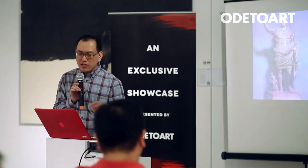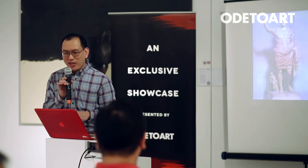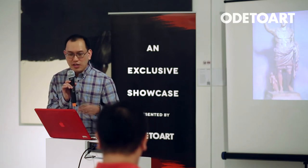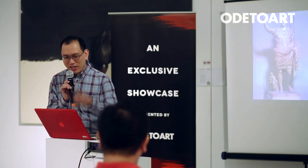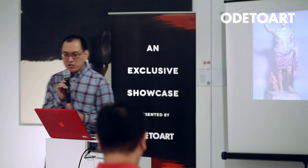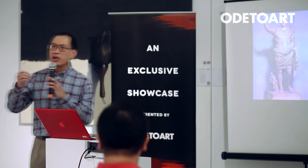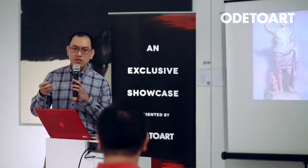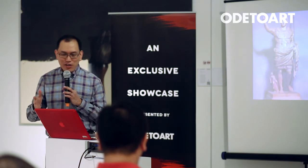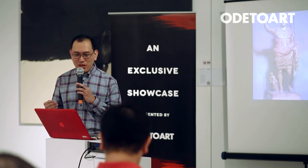Statues of Augustus always show him at the prime of his life, no matter how old he was. In fact, when this image was done, he was actually middle-aged — but yet they show him at the prime of his life. This was discovered at the villa of his wife, suggesting that after his death there was a kind of a cult of Augustus that was established. This whole image is really full of political intent.